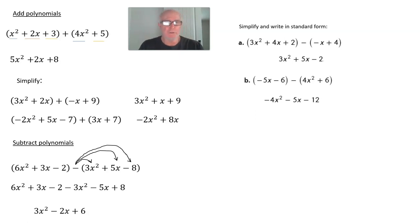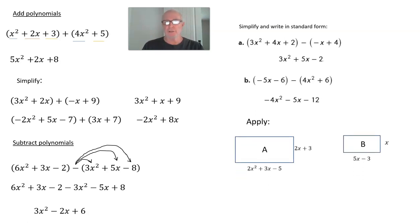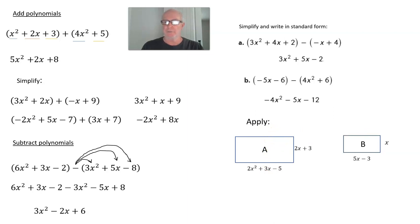The last thing we want to do is apply these principles to different kinds of problems. We have two rectangles. Rectangle A has a side of 2x + 6 and another side of 2x² + 3x − 5. In a rectangle, opposite sides are congruent, so opposite sides have the same measure. Rectangle B has a side of x and a side of 5x − 3.